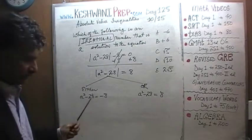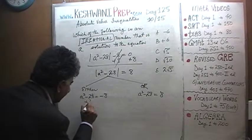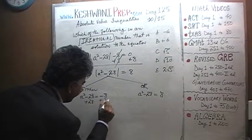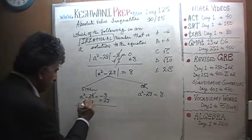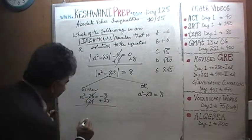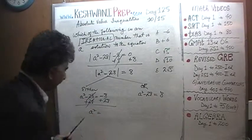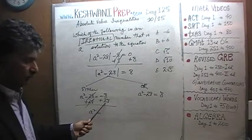We just solved for a squared. We have to bring the 28 on that side. Let's add 28 to both sides. Negative 28 and a positive 28, they kill each other. And a squared, we find out, equals negative 8 and a positive 28.